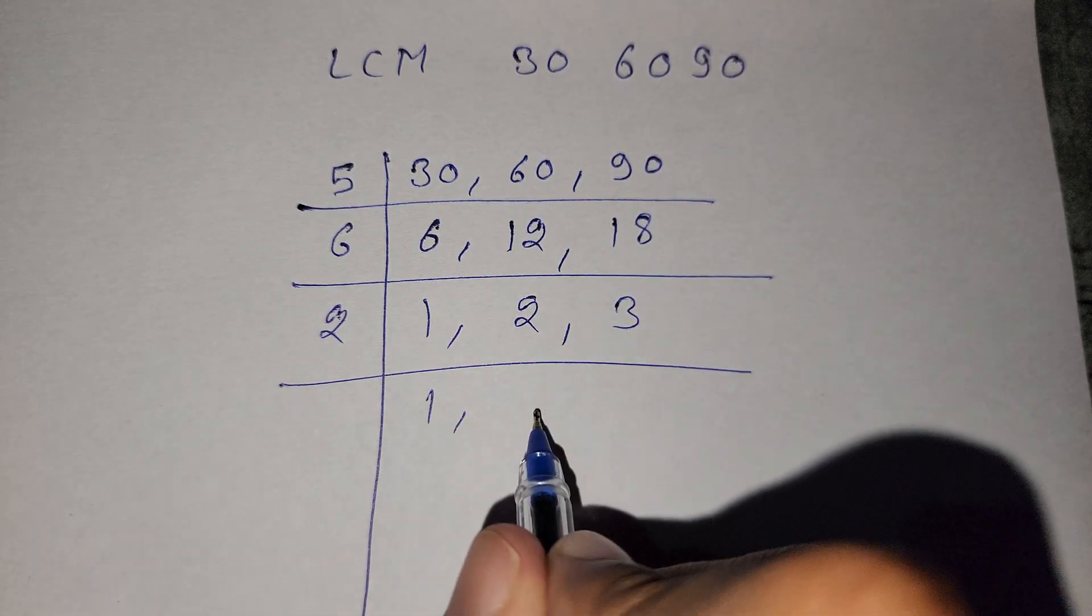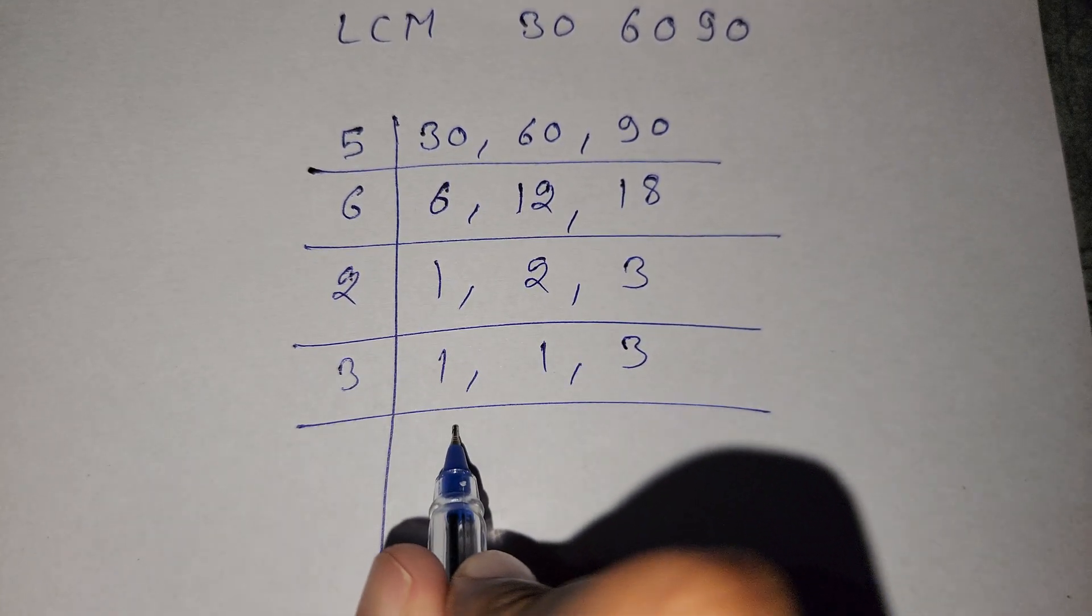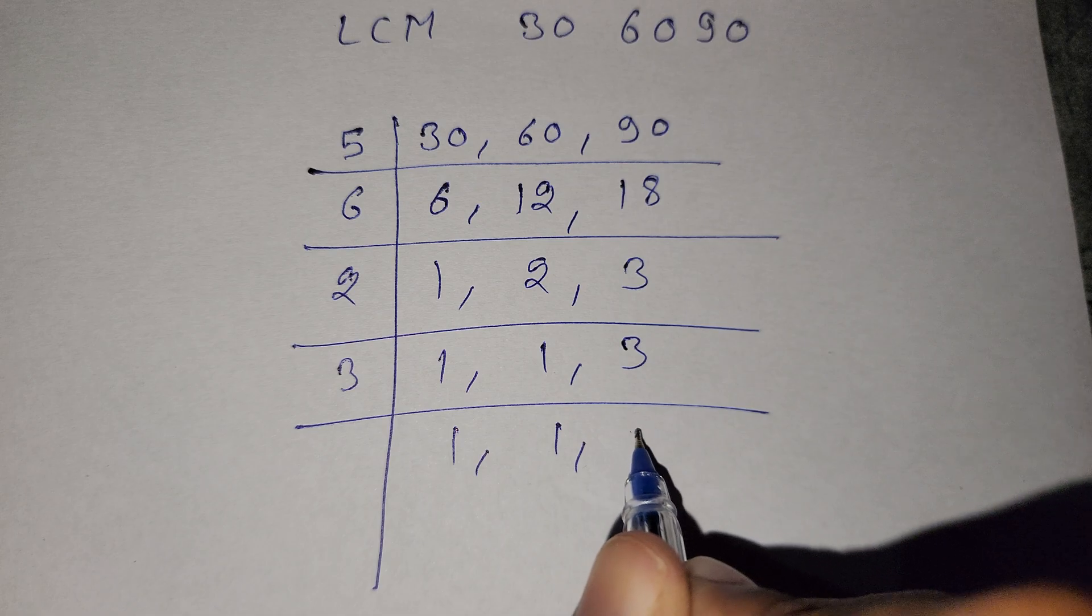Now we divide by 2. Here is 1, and 2 divide by 2 is 1, and here is 3. Now we divide by 3: 1, 1, and here is 1.